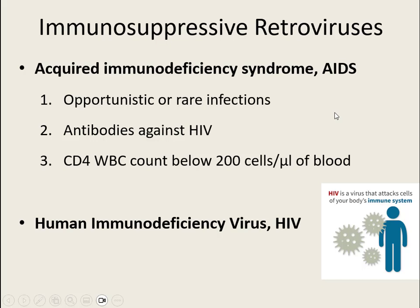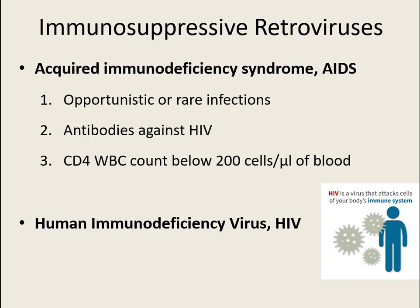The other group don't cause cancer — they go straight to destroying immune system cells, so they're immunosuppressive retroviruses. They cause the condition known as acquired immunodeficiency syndrome, more commonly known as AIDS. This means you acquire an immune system that becomes deficient — you weren't born with it not working — and it leads to opportunistic or rare infections that even a weak immune system can normally fight off.